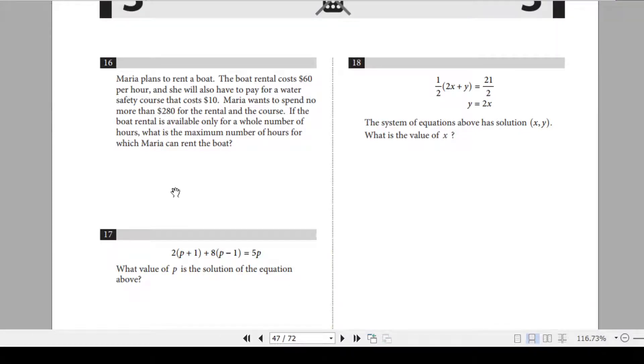Question 16. Maria plans to rent a boat. The boat rental costs $60 per hour and she will also have to pay for a water safety course that costs $10. Maria wants to spend no more than $280 for the rental and the course. If the boat rental is available only for a whole number of hours, what is the maximum number of hours for which Maria can rent the boat?